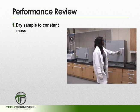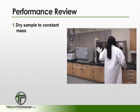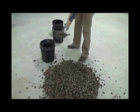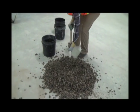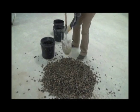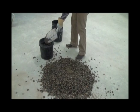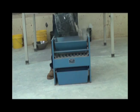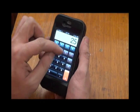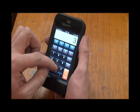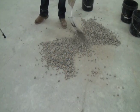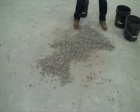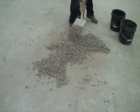First, we want to dry our sample to a constant mass. A quick note about drying: for control purposes, particularly where rapid results are desired, it is generally not necessary to dry coarse aggregate for the sieve analysis test. The results are little affected by the moisture content, unless the nominal maximum size is smaller than about ½ inch, or 12.5mm.